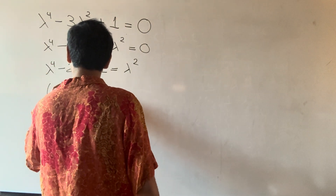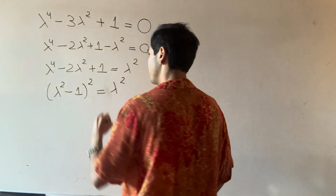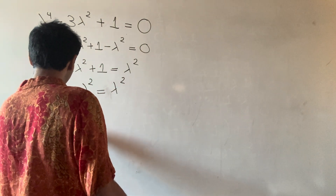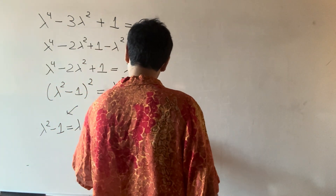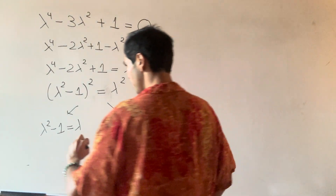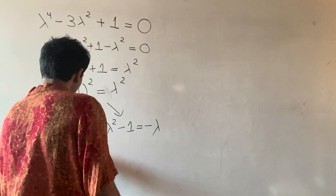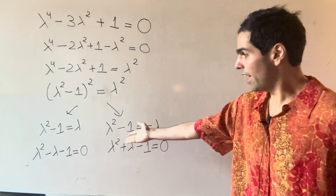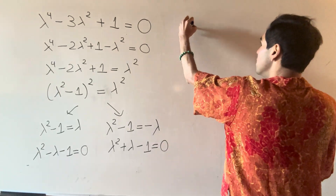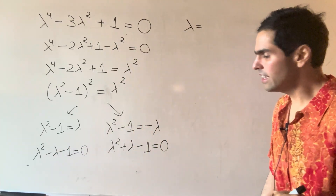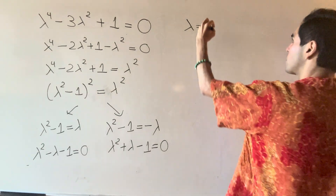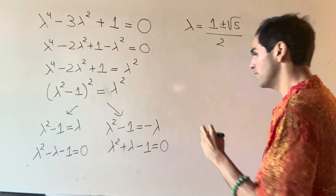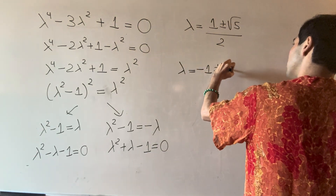Because we have (lambda squared minus one) squared equals lambda squared, which leaves us with two possibilities: either lambda squared minus one equals lambda, or lambda squared minus one equals minus lambda. That tells us lambda squared minus lambda minus one equals zero, or lambda squared plus lambda minus one equals zero. And then you can solve these using the quadratic formula. So on the one hand you get lambda equals (one plus or minus square root of five) over two, or lambda equals (minus one plus or minus square root of five) over two.